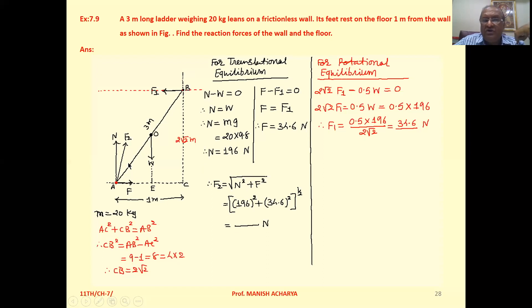Then for the horizontal forces, F1 is in negative x direction and frictional force F is in positive x direction. So F minus F1 equal to 0. F equals F1. But now we have to calculate this F1. We don't know how much it is. Keep it as it is.